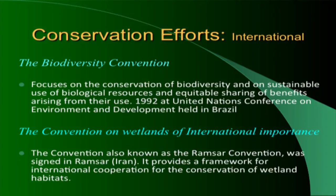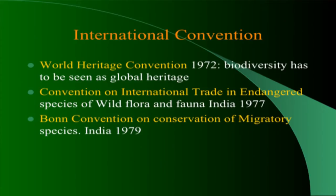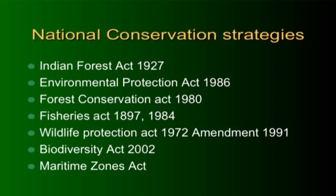There are international and national conventions and laws. The Biodiversity Convention calls for equitable sharing of benefits and conservation of biological resources. The Ramsar Convention is for wetland conservation, with 25 sites designated as Ramsar sites in India. National laws include the Indian Forest Act, Environmental Protection Act, Forest Conservation Act, Fisheries Act, Wildlife Protection Act, Biodiversity Act, and the Coastal Regulation Zone Act.